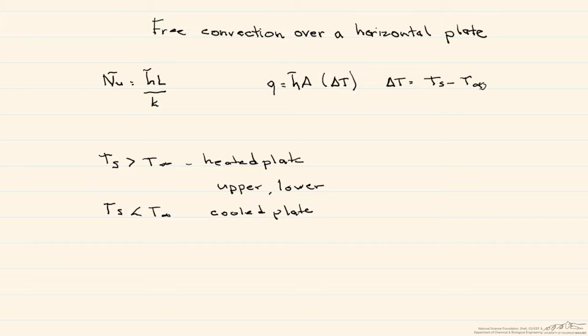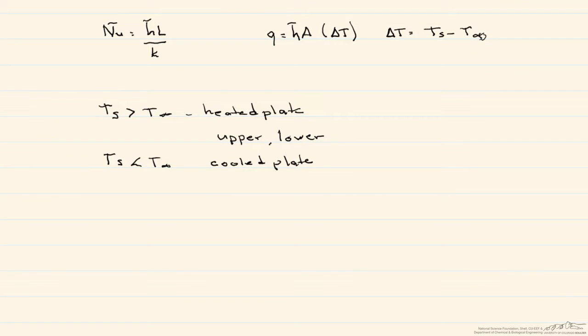We're going to use the same conditions that we used for a previous screencast that looked at a vertical plate with free convection. We're going to look at both surfaces of a heated plate where the surface temperature is 90 degrees C and the ambient temperature is 25 degrees C.